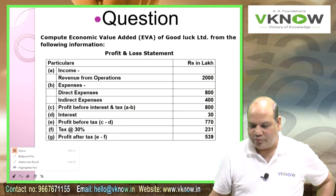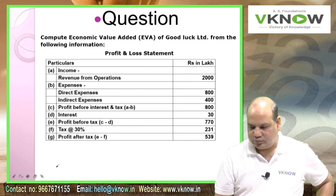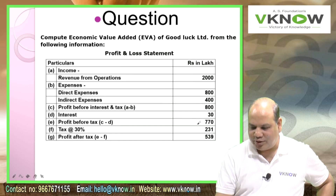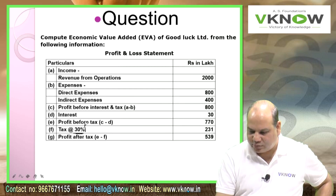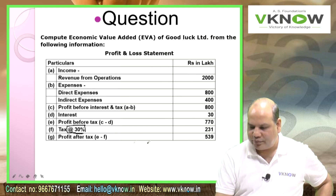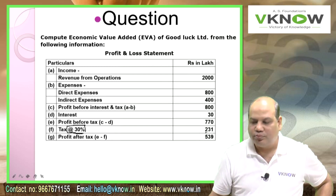Point D: interest is 30. Point E: PBT (C minus D) is 770. Point F: tax at the rate of 30 percent. Underline the tax rate — 30 percent. Profit after tax is 539.